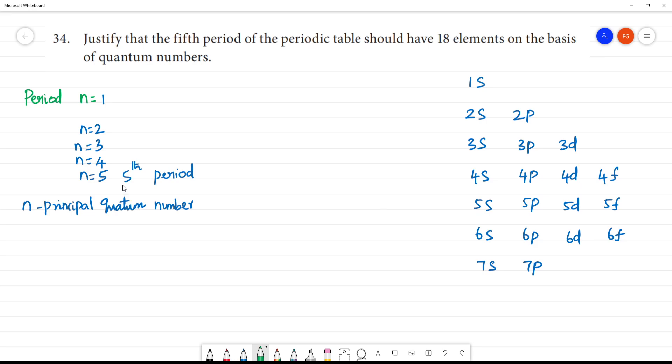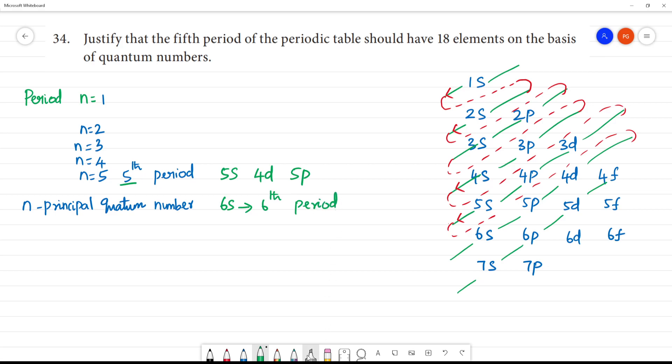So, we have 5s. Fifth period is where we start 5s. 6s belongs to 6th period. So, 5th period has 5s, 4d, and then 5p, right?